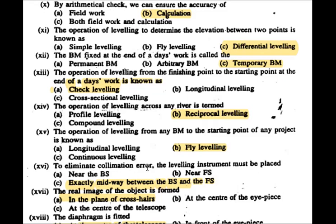To eliminate the collimation error, the leveling instrument must be placed exactly midway between the back sight and fore sight stations.